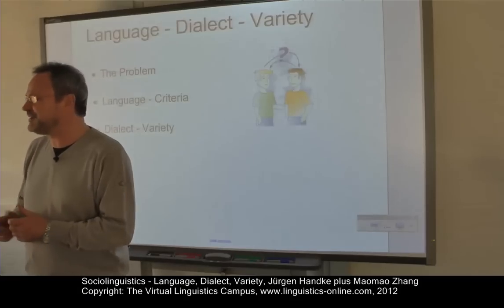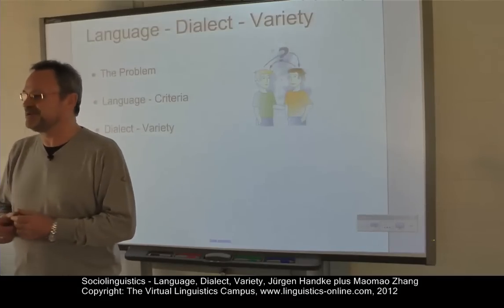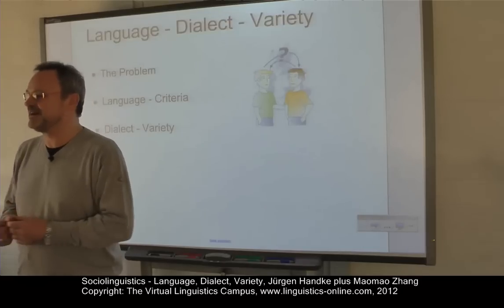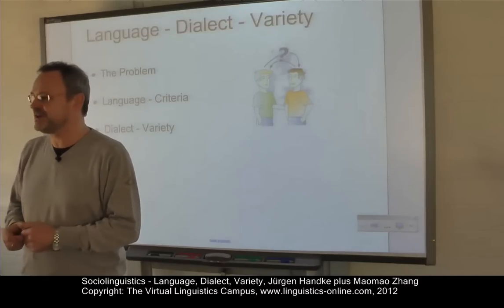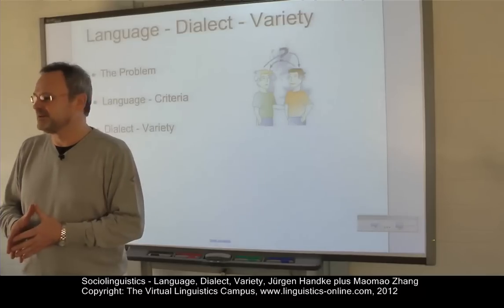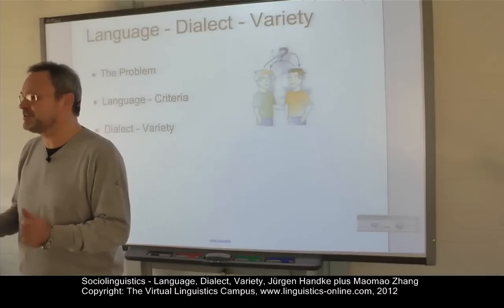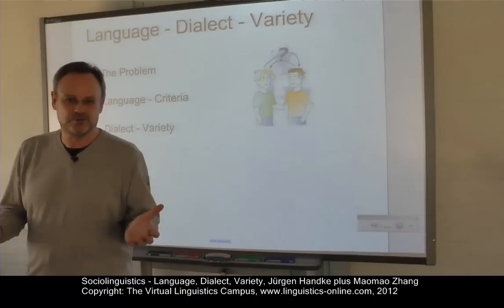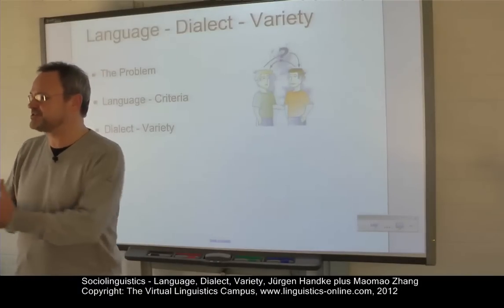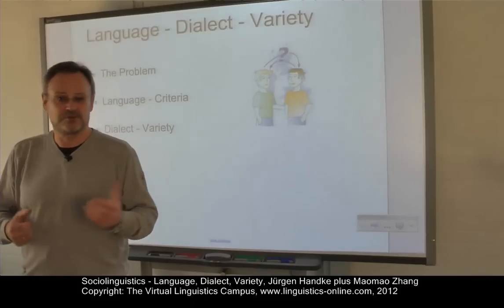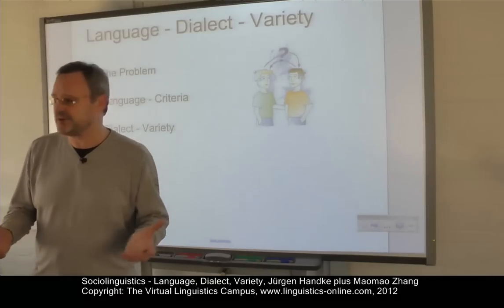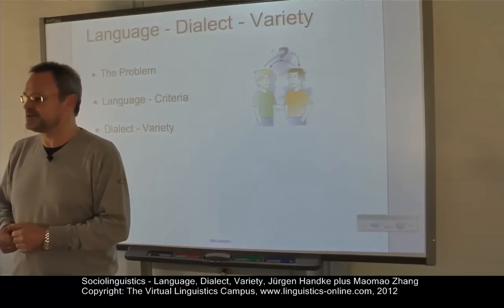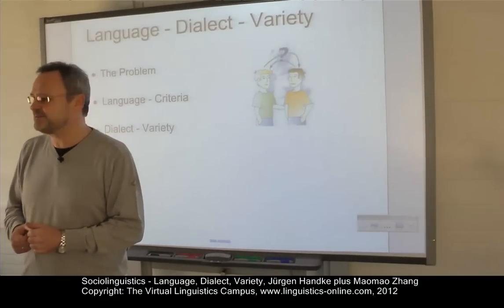One of the most difficult theoretical issues in linguistics is to distinguish between language and dialect, or language and varieties. At first sight, there may be no problem at all. If two people speak differently, there seem to be only two possibilities. If they understand each other, they must speak varieties of the same language. If not, they can be said to speak different languages. But is it really that simple?